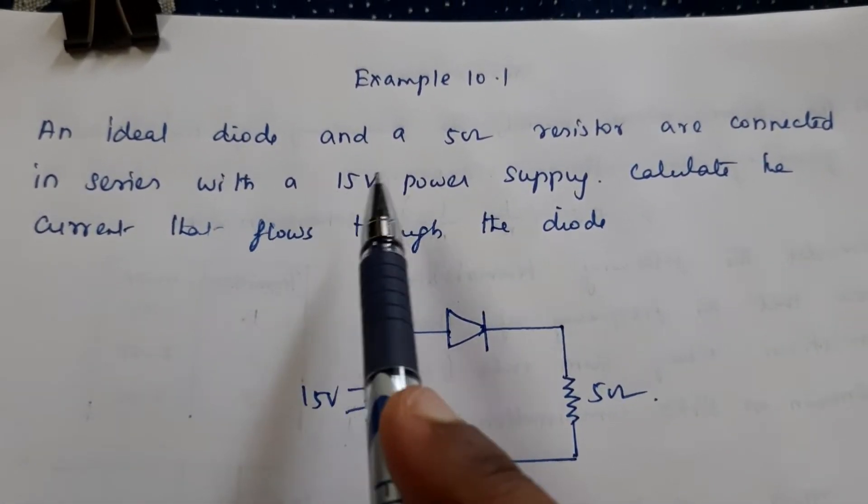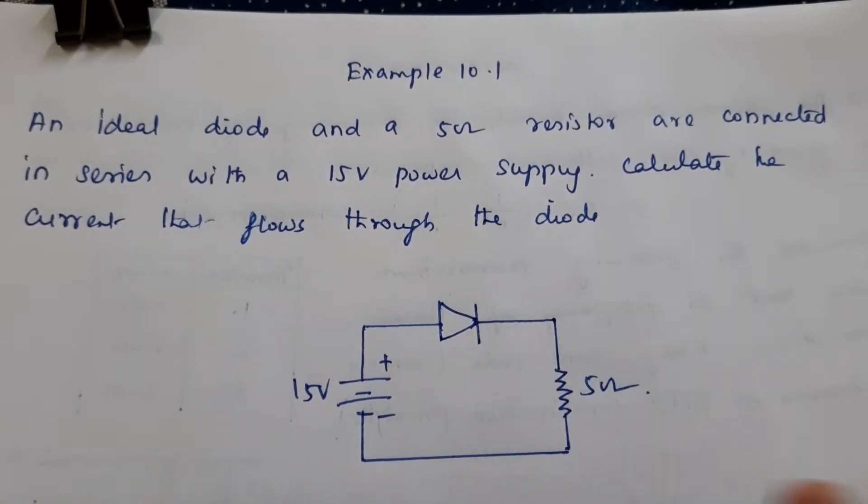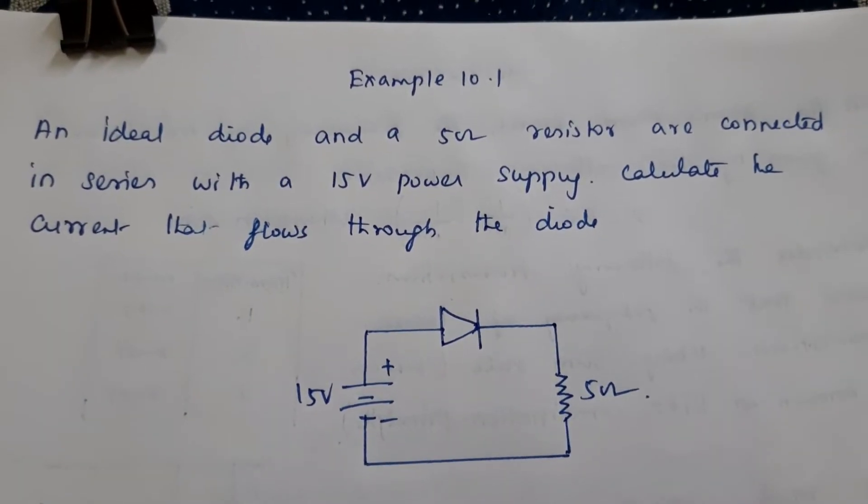Example 10.1: An ideal diode and a 5 ohm resistor are connected in series with a 15 volt power supply. Calculate the current flows through the diode.